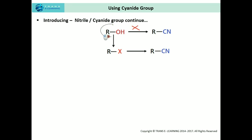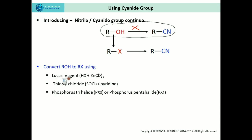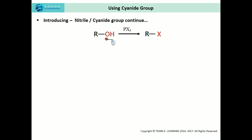So we'll be taking the longer route — converting alcohol into alkyl halide first. We can do this using Lucas reagent (a mixture of hydrogen halide and zinc chloride), thionyl chloride (SOCl₂ plus pyridine), or phosphorus trihalides or pentahalides such as PCl₅. Once we have the alkyl halide, we then convert it into alkyl nitrile or alkyl cyanide.